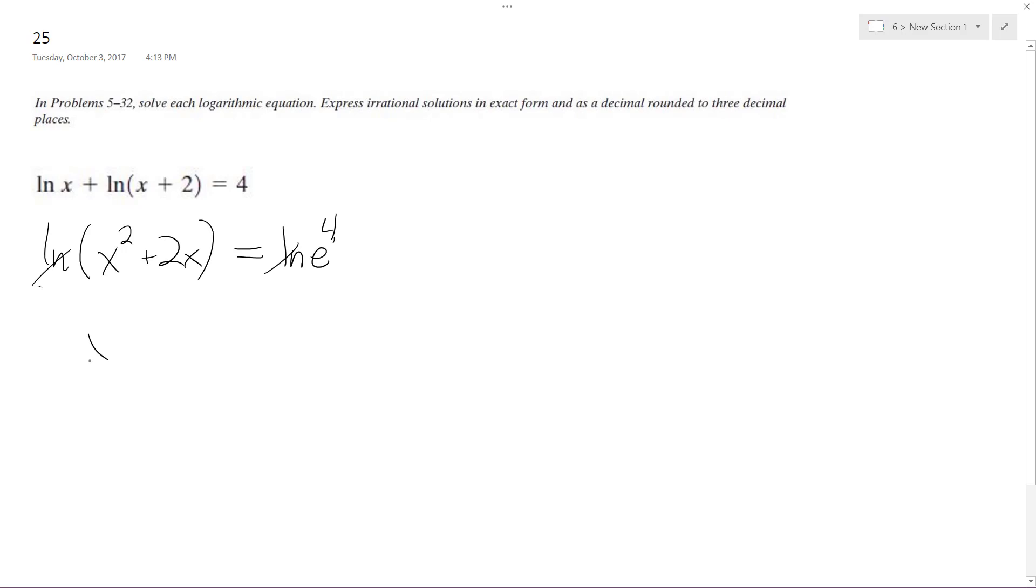We get x squared plus 2x equals e to the fourth, or x squared plus 2x minus e to the fourth equals zero.